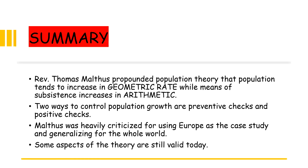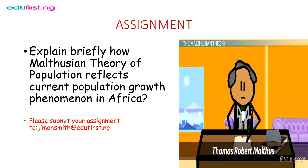Now let's summarize what we have discussed. Reverend Thomas Malthus propounded his population theory in 1798, stating that population tends to increase in geometric rate while means of subsistence increases in arithmetic rate. We also looked at two ways to check population growth: preventive checks and positive checks. Malthus was heavily criticized for using Europe as his case study and generalizing it to the whole world, but some aspects of the theory are still valid today. Your assignment: explain briefly how Malthusian theory of population reflects current population growth phenomena in Africa.